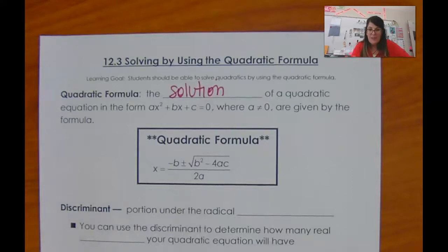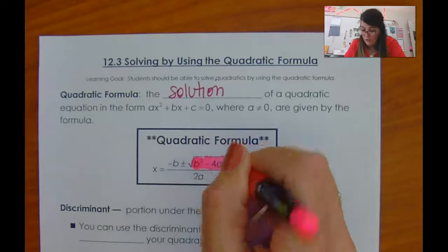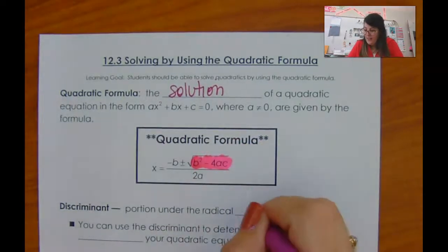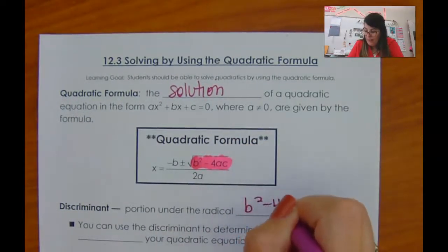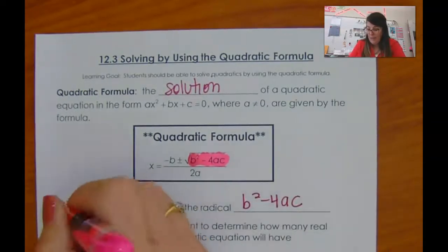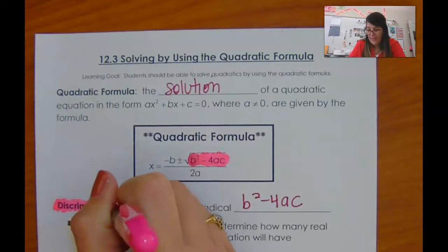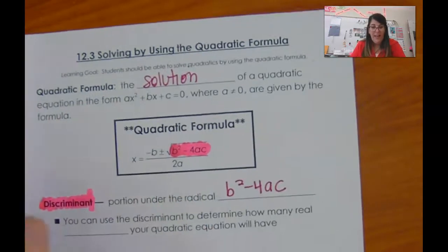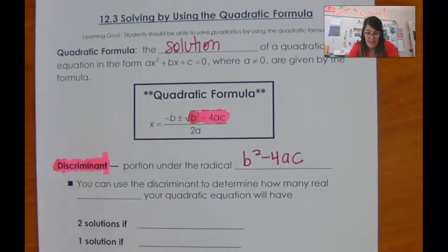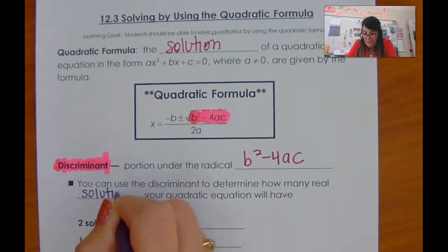A couple things you should know about this formula. The stuff that's under the radical — the part that is b squared minus 4ac — has a special name. It's called the discriminant. It can tell you exactly how many solutions you have.